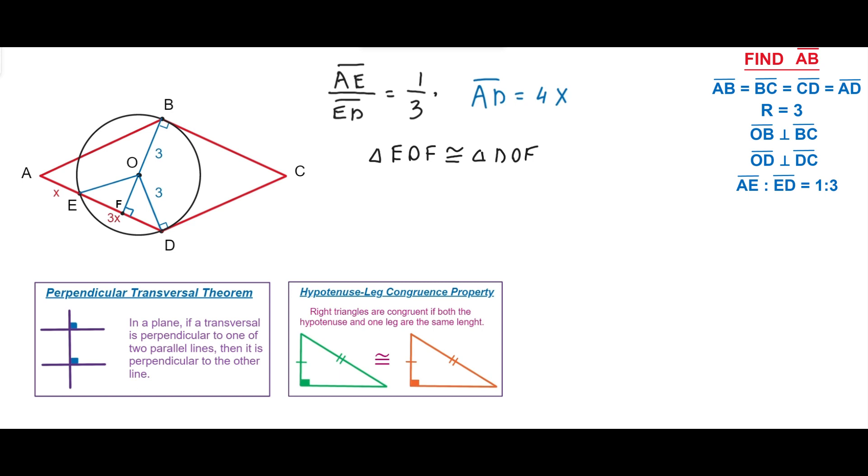From two triangles congruence follows that corresponding sides are congruent. Namely, the sides EF and FD are congruent and they are equal 1.5X each.